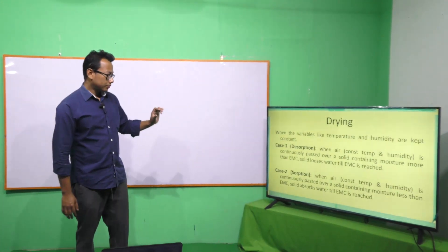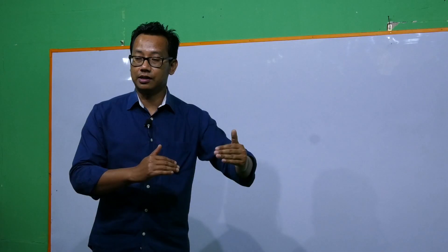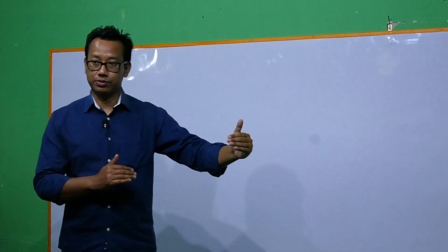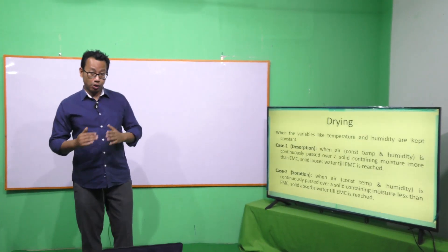When the temperature and humidity are kept constant, there are two cases that influence the EMC. Case one is also known as desorption and case two is called sorption. When a solid having a higher EMC than the surrounding is exposed to a definite temperature and humidity, the solid loses water from itself to its surrounding. That process is known as desorption — 'de' meaning going away or reducing.